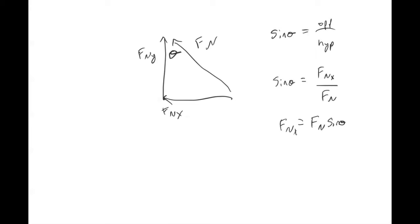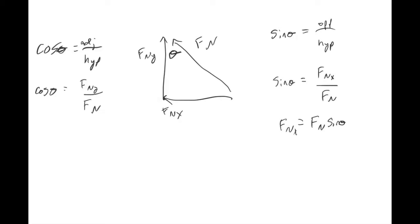This is the opposite of what it was for projectile motion — don't always assume that the X component goes with cosine and the Y component always goes with sine, because that's not always the case, and this is one of the prime examples. For cosine theta, that's adjacent over hypotenuse, so the Y component of the normal force goes with cosine theta.